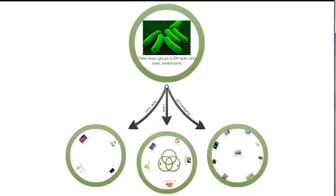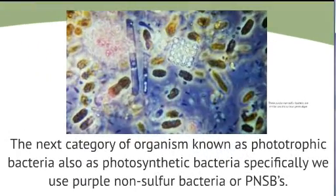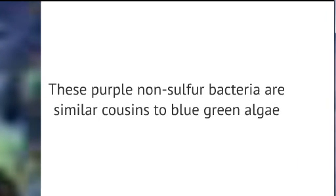The next category of organism, known as phototrophic bacteria, also known as photosynthetic bacteria. Specifically, we use purple non-sulfur bacteria or PNSBs. These purple non-sulfur bacteria are similar cousins to blue-green algae.